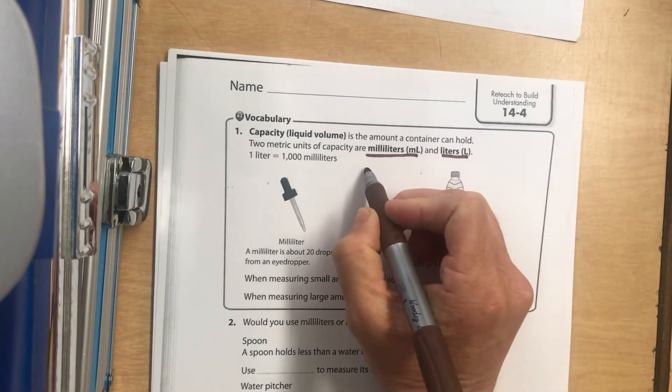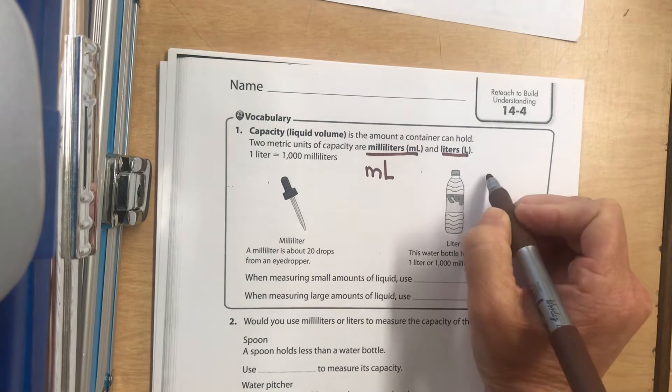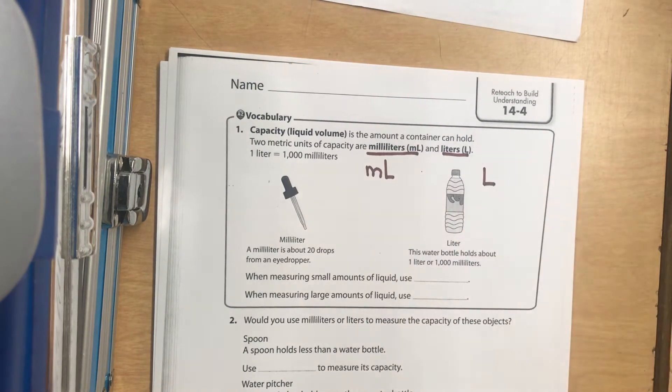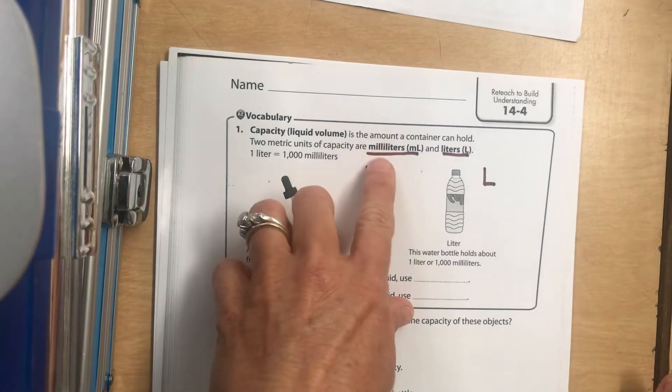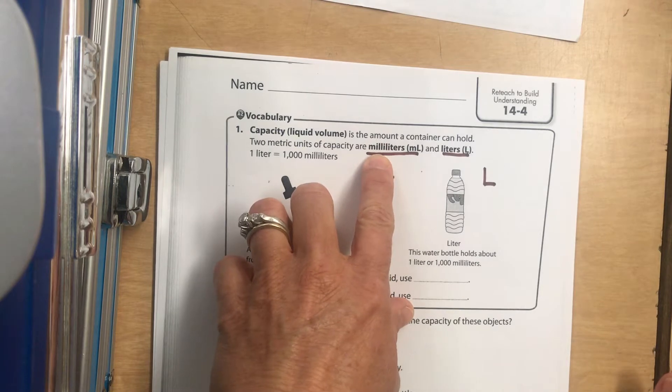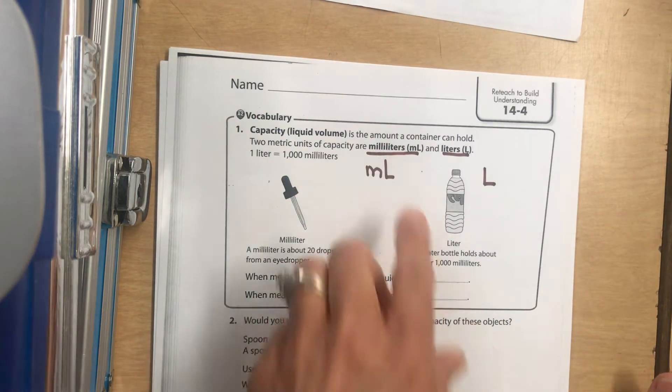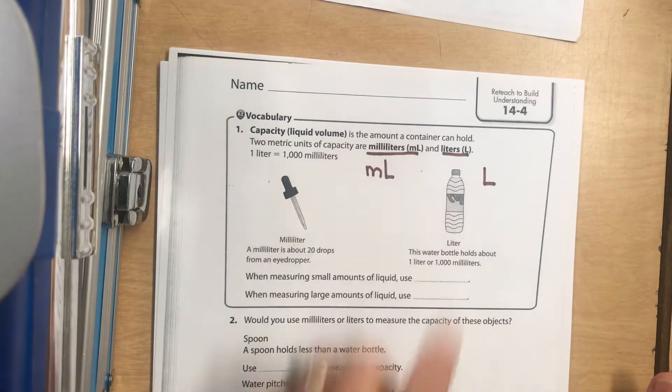Milliliters is lowercase m, capital L, and liter is capital L. Now, milli means, think of like a million, like it's little, little, little. Little liters. Milliliters, little liters.